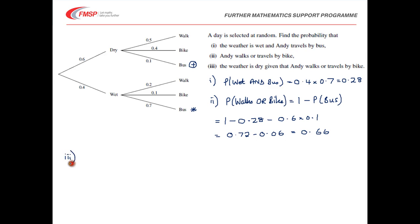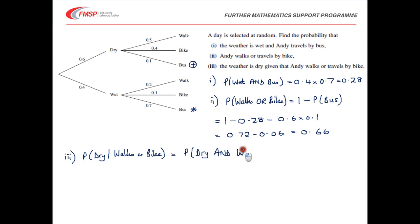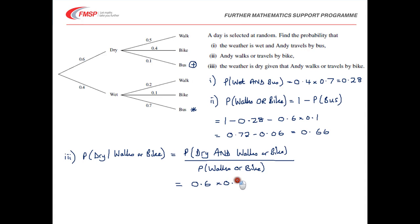For part three, we want P(dry given Andy walks or travels by bike). As we've already worked out P(walks or bike), it's quicker to use the formula: P(dry and walks or bike) over P(walks or bike). Dry and walks or bikes gives 0.6 times 0.9, and walks or bikes we've just worked out to be 0.66. So that's 0.54 over 0.66, which simplifies to 9/11.